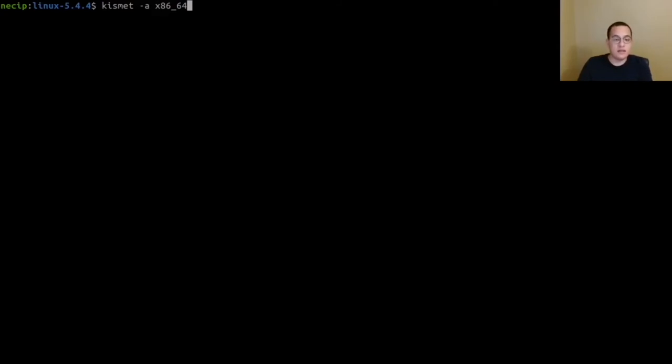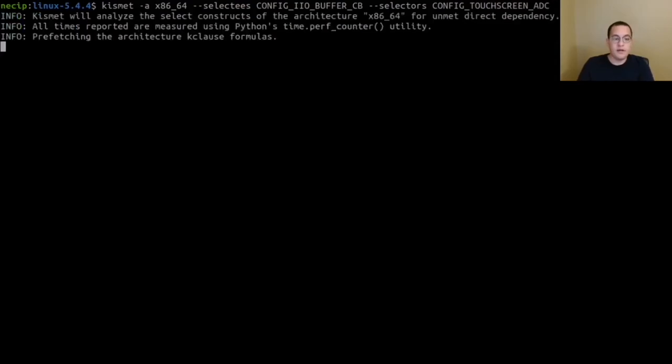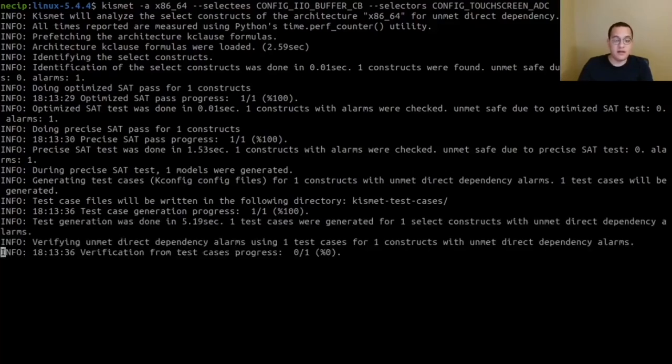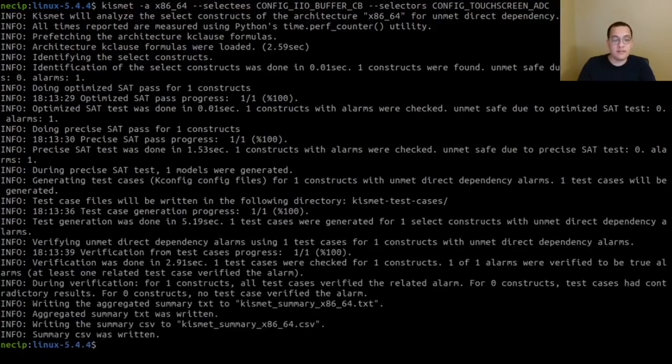In addition to the architecture, we can specify which select constructs we would like to analyze. And for our case, let's pass one. When run, Kismet will check this construct in several phases for optimization. If this is a bug, it will generate a test case and validate the bug. And after the analysis finishes, we will have a txt file containing the aggregated results.